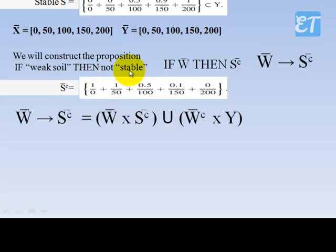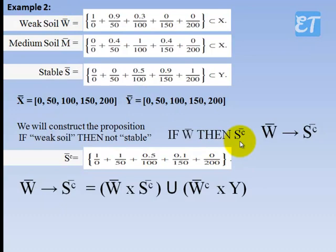The proposition is: if weak soil, then not stable. That is our if-then rule. The antecedent is W (weak soil) and the consequent is not stable. Stable is S, so not stable is the complement of S.